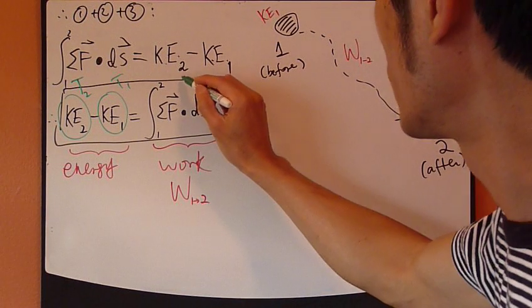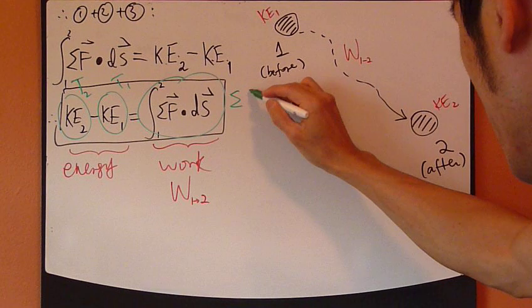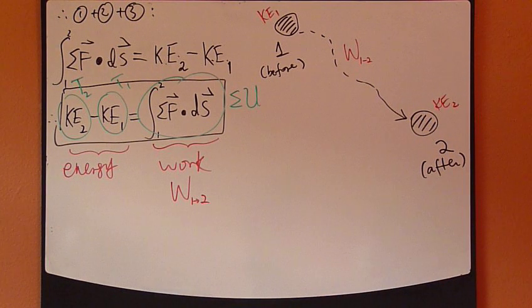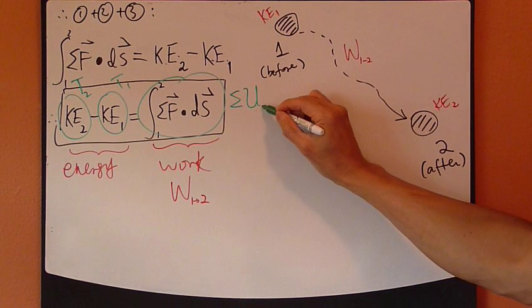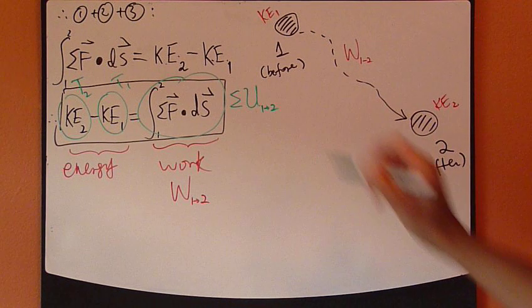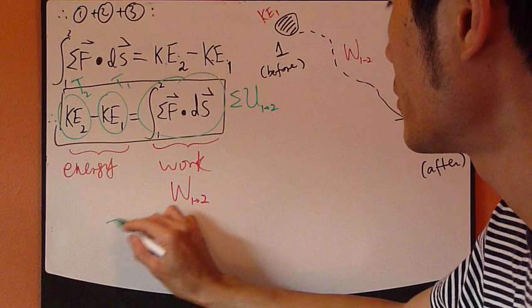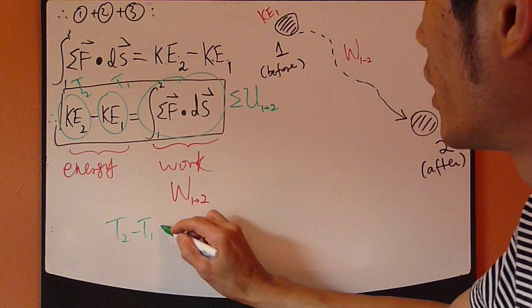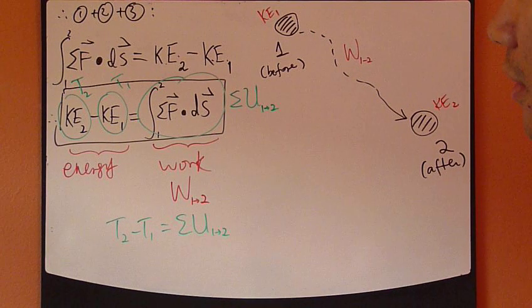And then this term, the textbook uses T2. So this becomes T2 minus T1 equals sum of U12.